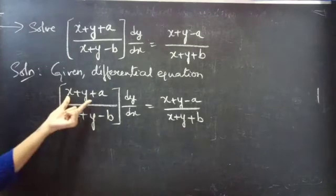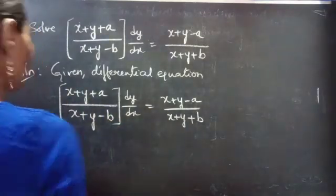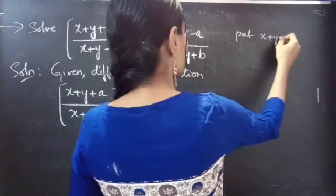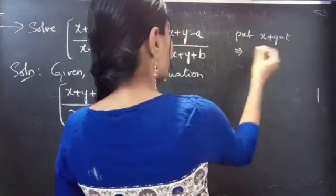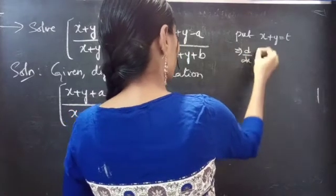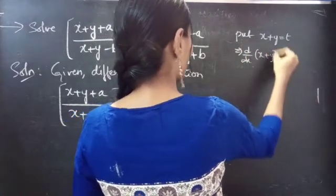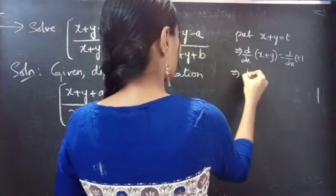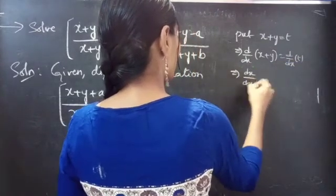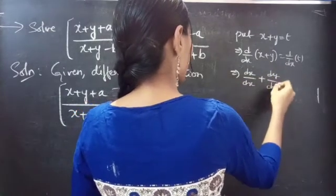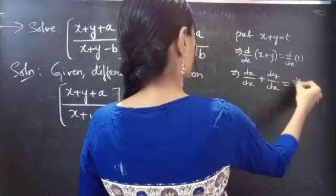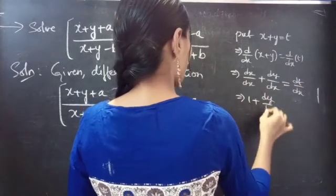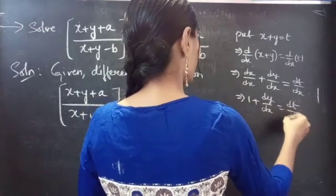Solution. Given the differential equation, let x + y = t. If you differentiate both sides, the derivative of x with respect to x plus the derivative of y with respect to x equals the derivative of t with respect to x. Then 1 + dy/dx = dt/dx.